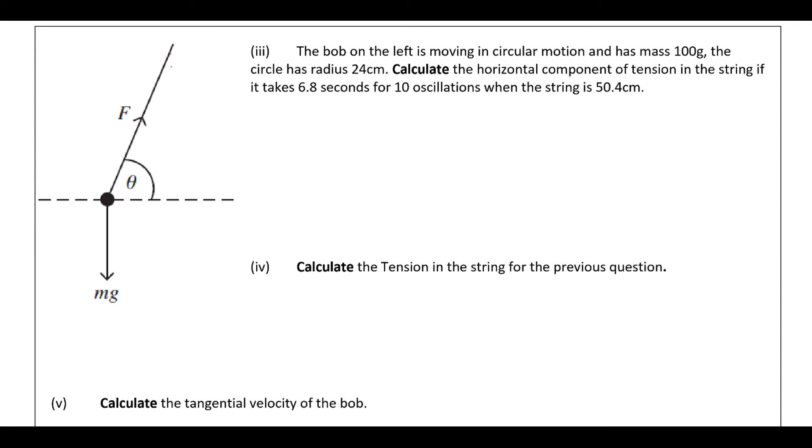So if we draw a few lines in, effectively it's going in a circle with this radius here. And it's sort of coming out of the page round and down back into the page in a horizontal circle. Okay, so we have this radius is 24 centimetres. The actual length is 50.4. And it takes 6.8 seconds to do 10 oscillations. Because remember when you're timing oscillations you typically time 10 oscillations. So first of all the time period is going to be 6.8 divided by 10. So 0.68 seconds there. That's going to be your time period.